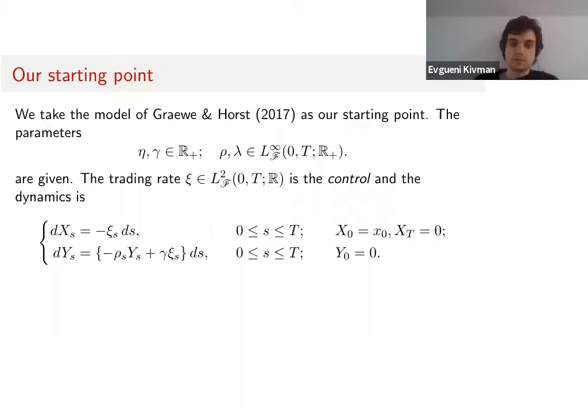X is the single asset starting at x₀, and at time T we want to have this asset liquidated. We also have a process Y, which is the price impact—a deviation between the exogenous price and the real price, and this deviation comes from our trading.